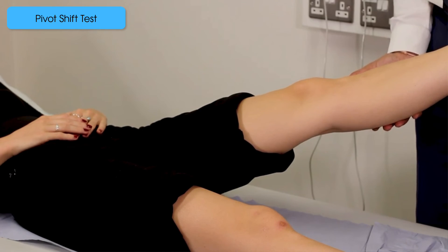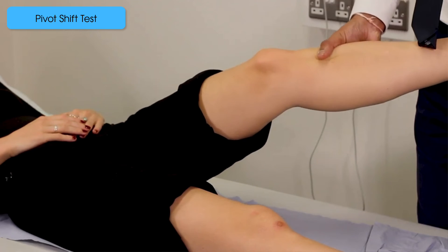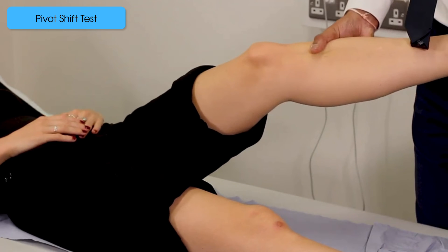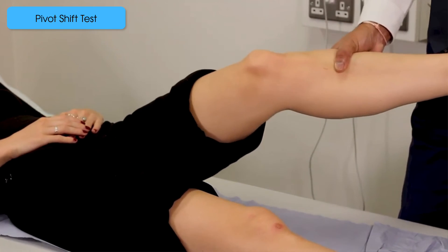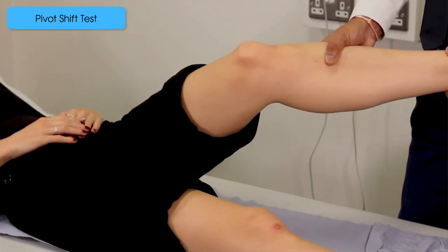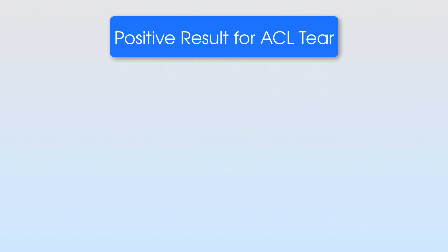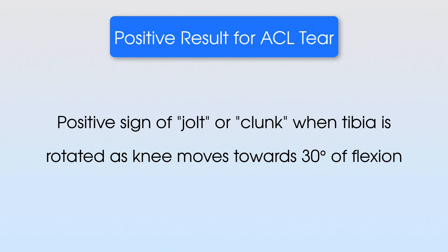We start with the patient's knee in full extension, then slowly flex the knee to around 30 degrees of flexion. As we flex the knee, we apply a valgus or inward force using the hand on the lateral leg, while simultaneously internally rotating the tibia with the hand holding the distal medial tibia. As we move the knee from extension towards flexion, we watch or feel for a jolt, shift, or clunk that may occur typically around 30 degrees of flexion. This occurs because the tibia is reducing back onto the femur due to the torn ACL. A positive pivot shift test is when we feel that noticeable clunk as the tibia reduces on the femur around 30 degrees of flexion, indicating an ACL tear.